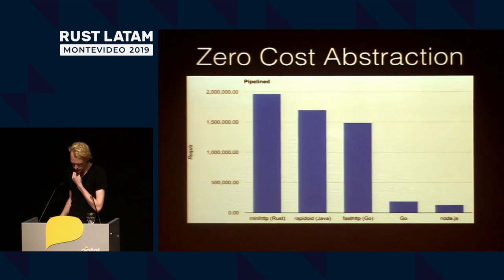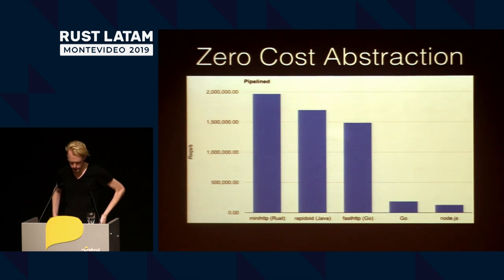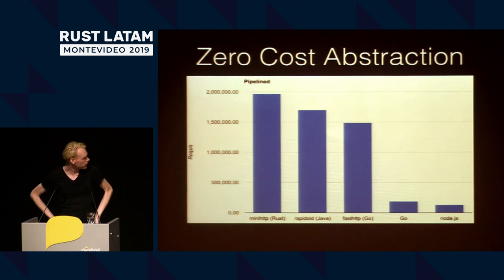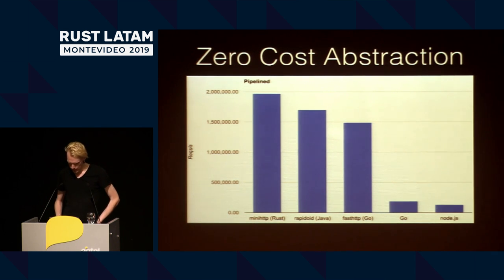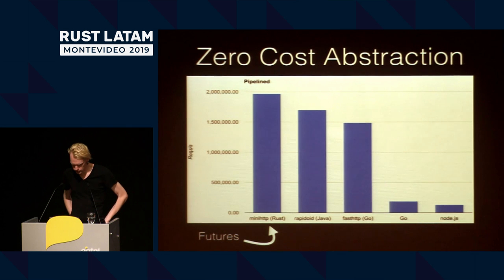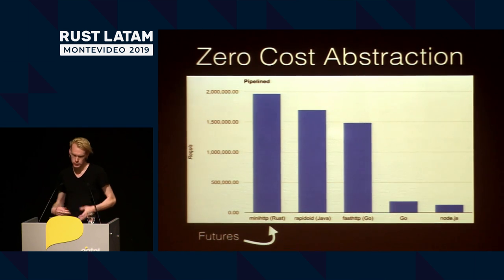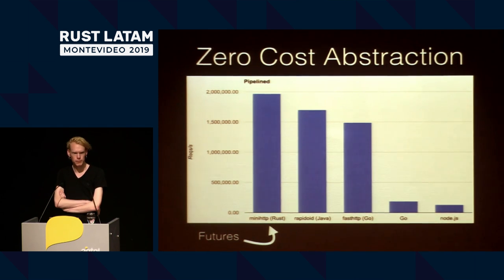This model ended up being quite fast. This is the benchmark posted in the first post about futures, benchmarking futures against many different implementations from other languages. Higher is better, and futures is the one on the far left. We had this really great zero-cost abstraction that was competitive with the fastest kinds of async I/O implementations in many other languages.